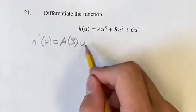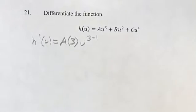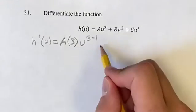Then you take u, and our new exponent is the old one minus 1. Bring the exponent down, subtract by 1.